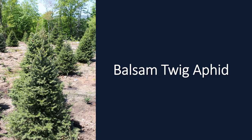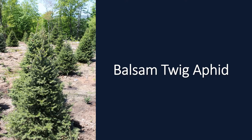The balsam twig aphid causes needle discoloration and needle distortion when populations are large enough. This sap-sucking pest prefers trees like balsam fir, Fraser fir, and other true firs. These aphids feed on the sap of developing buds and new needles in early spring. This feeding reduces the plant's ability to produce healthy needles, resulting in needle curl and distortion. There also may be a white woolly wax present, which is an indicator of this pest. The balsam twig aphids are tiny, soft-bodied insects with piercing, sucking mouth parts.